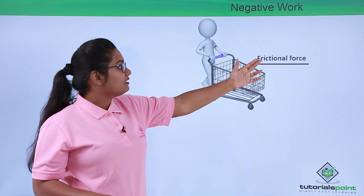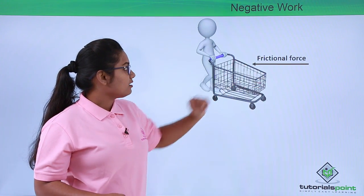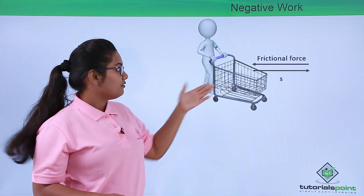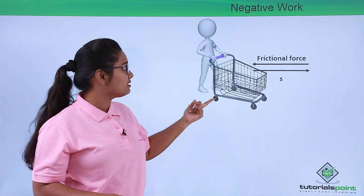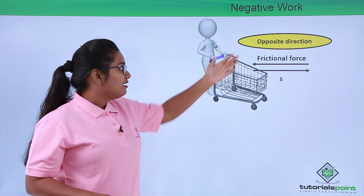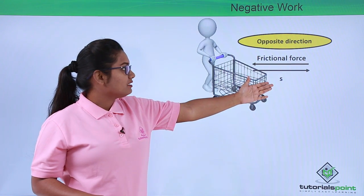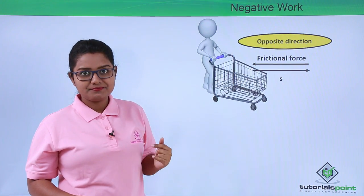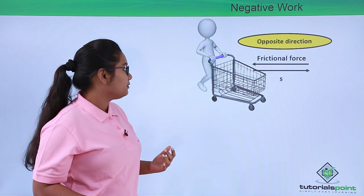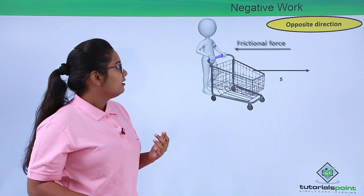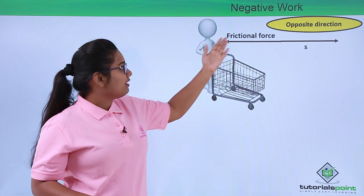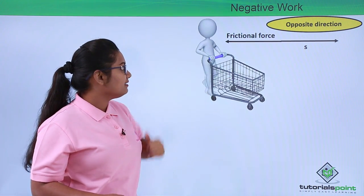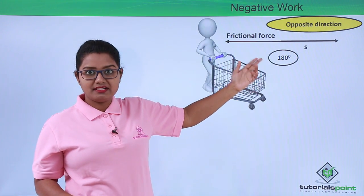Since the frictional force is in the backward direction, it is opposite to the displacement of the trolley which is in the forward direction. When we place these two vectors side by side, we see that the angle between the frictional force and the displacement is 180 degrees.